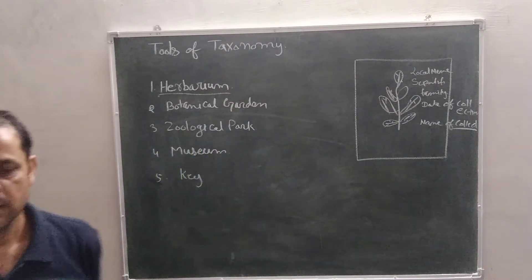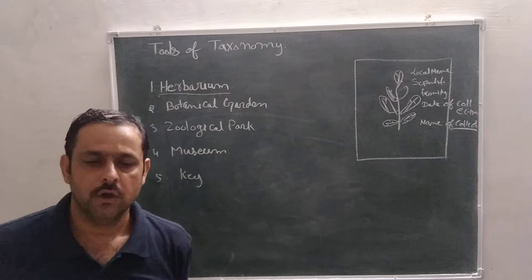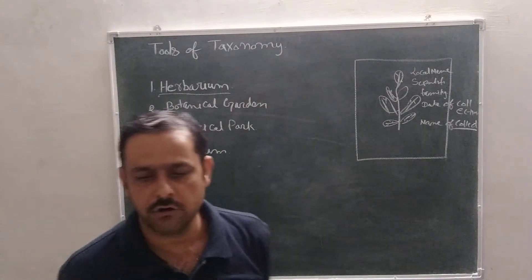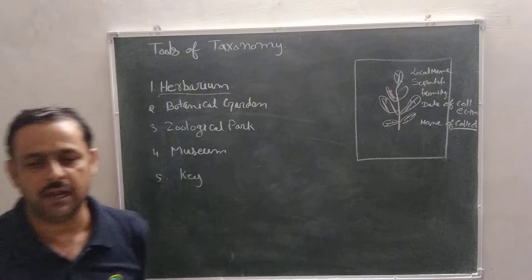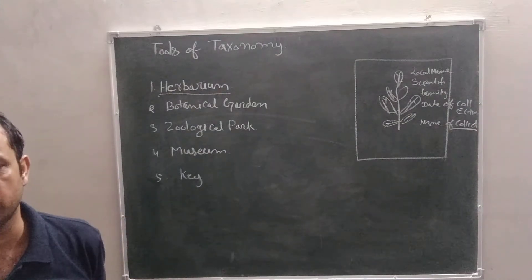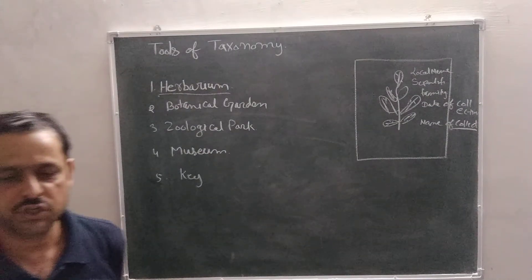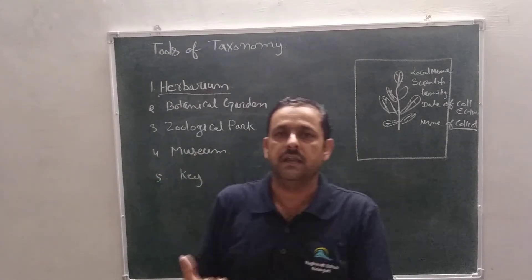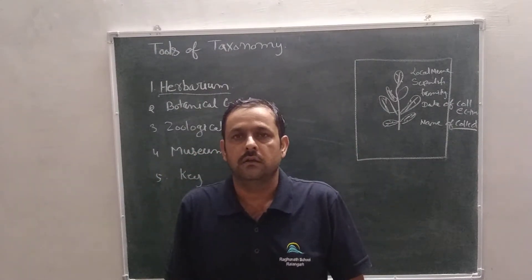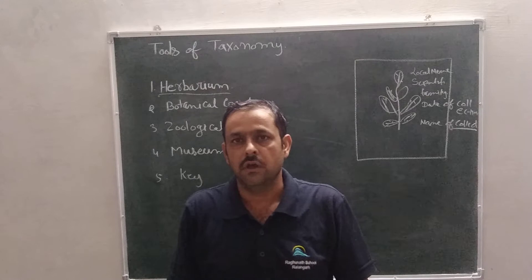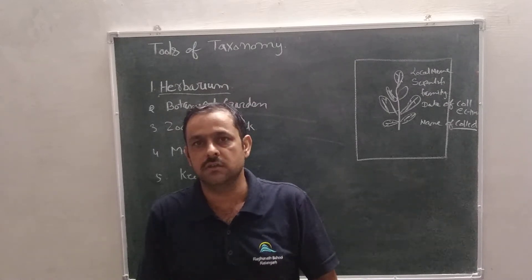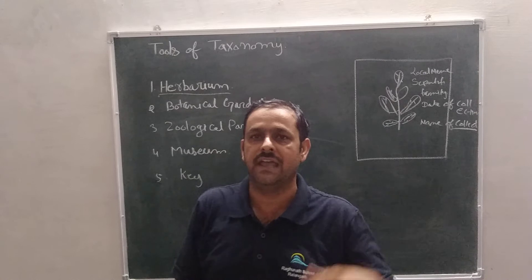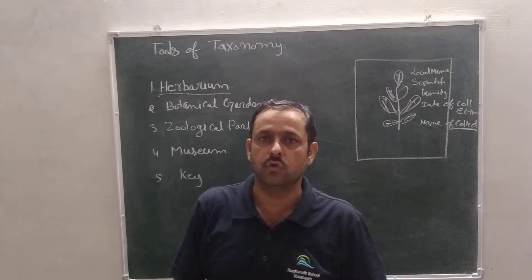Herbarium is a collection of well-dried and nicely preserved plants which are collectively identified and arranged according to an approved system of classification. Many studying institutes arrange these specimens on the basis of classification systems like Hutchinson, Bentham, and Hooker.